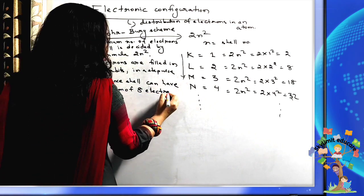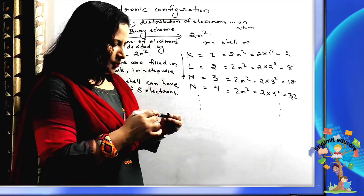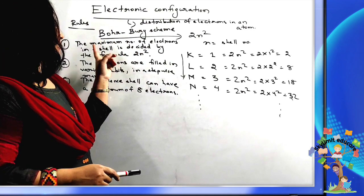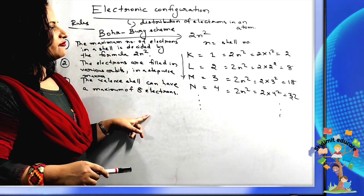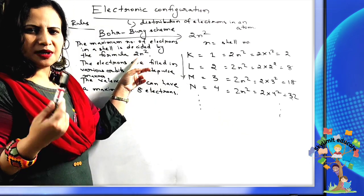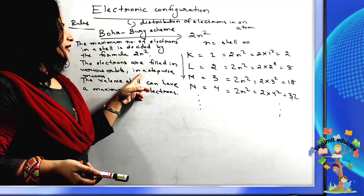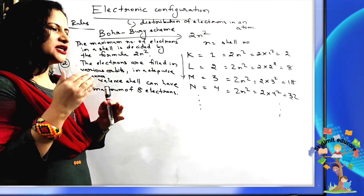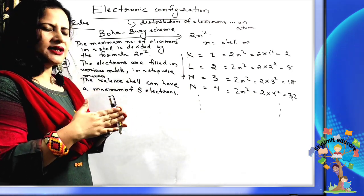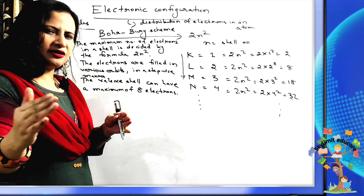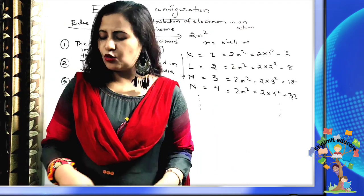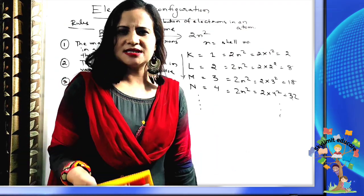Keep these three points in mind while writing the electronic configuration for any atom. By the formula 2N², decide the maximum capacity of each shell. Fill electrons starting from the lowest energy shell, that is the K shell, then L sequentially. The valence shell cannot have more than eight electrons — this is a strict rule.